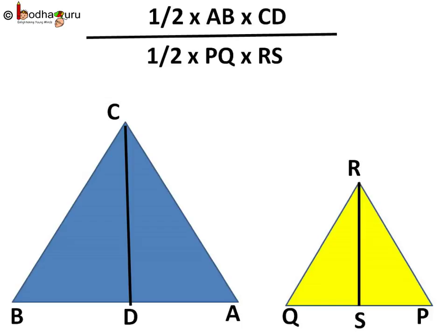Let's find the relation between their areas. Here two similar triangles ABC and PQR are given. Area of ABC is half into AB into CD, which is a height, and area of triangle PQR is half into PQ into height RS.